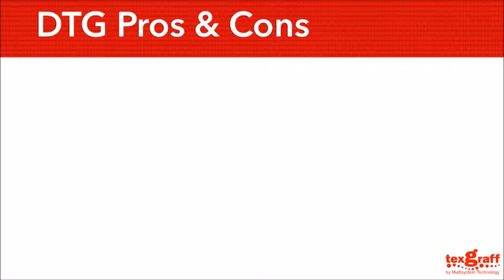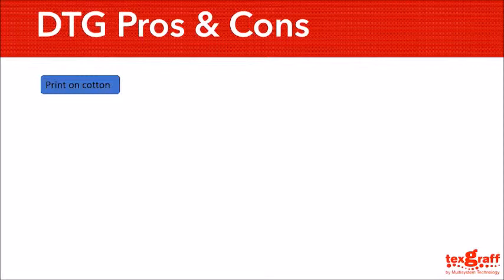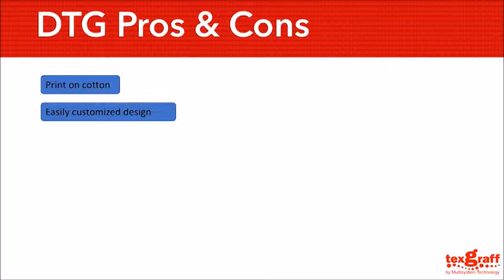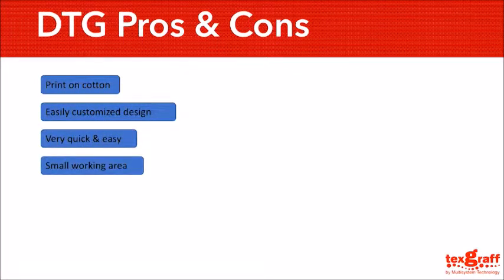Now we're going to discuss the pros and cons of DTG printing. First on the list of pros is printing on cotton — basically everyone likes to wear cotton because it is comfortable and smooth. Unlike sublimation, which is not an ideal solution to print on cotton. The DTG printing method is pretty simple; you can print any sort of artwork or design you prefer on your shirt. This relates to it being quick and easy, as well as requiring a small working area — in a matter of few clicks you get your designs printed on a shirt in a small space. The size of the DTG printer doesn't really eat up all of your working space.